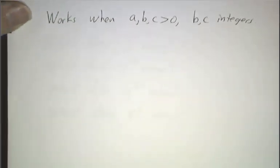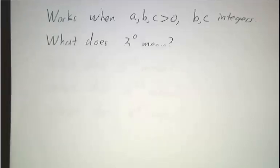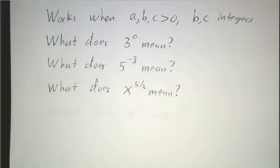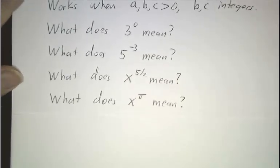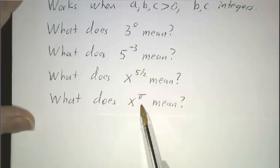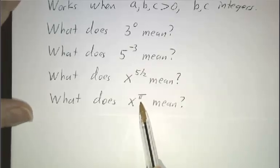This time we're going to start to talk about what zero and negative powers mean. So we're going to say, what does 3 to the 0 mean? What does 5 to the negative 3 mean? What about fractional powers? If I give you 5 to the 5 halves, or 3 to the 5 halves, or x to the 5 halves, what does that mean? And finally, what does not a fractional power, but an irrational power, what does that mean? So let's take these one at a time.